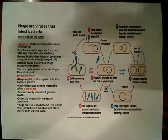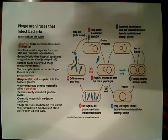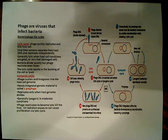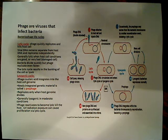In the lytic cycle, the viral DNA remains separate from the host DNA and replicates independently — it doesn't get integrated into the bacterial chromosome at all. The viral DNA remains separate, replicates independently, and eventually produces virions, which get released during lysis.